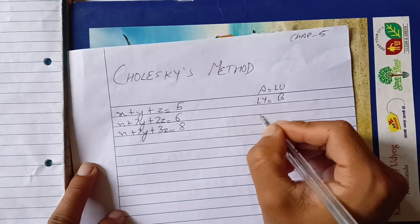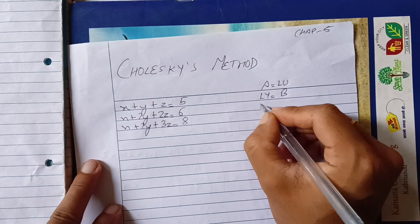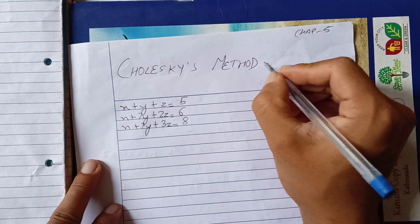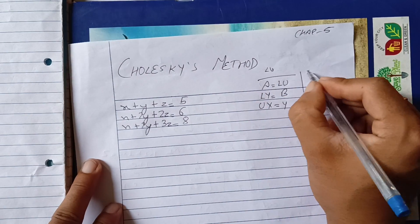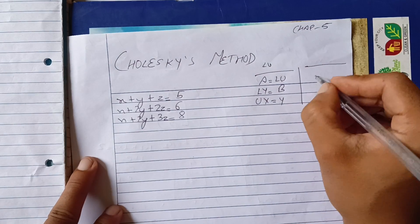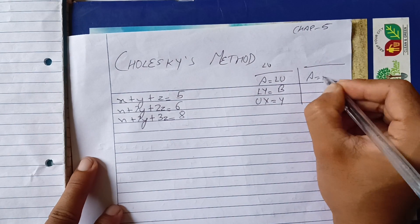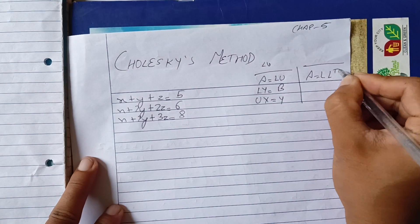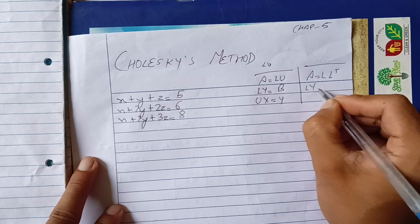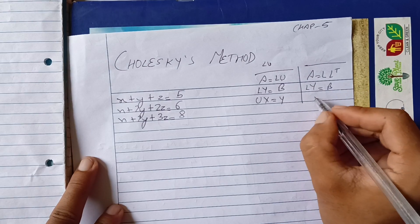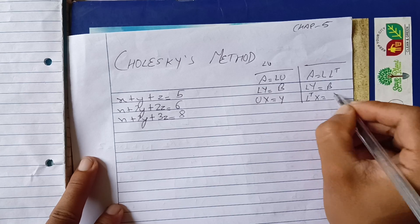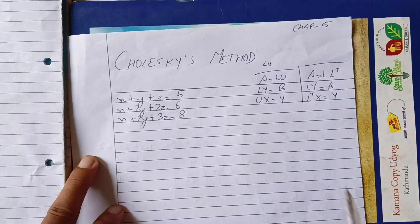Y equals B here and UX equals Y here. For the LU method, the schema is: A equals L and L transpose, and L transpose into X equals Y.